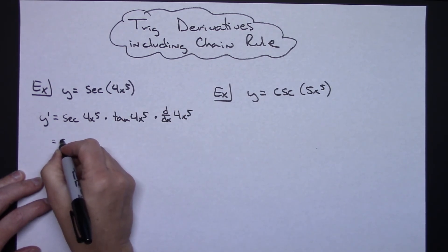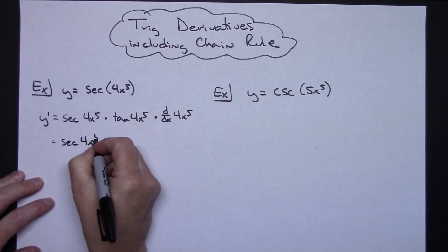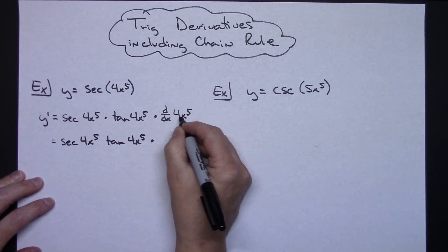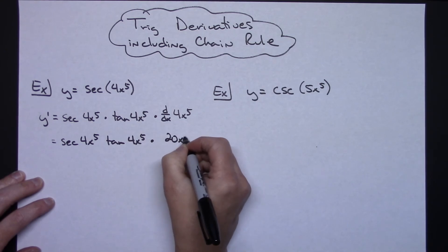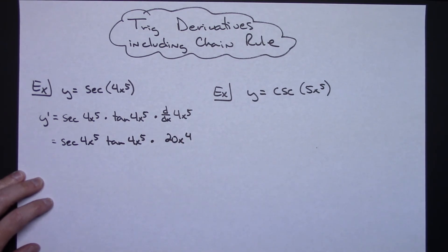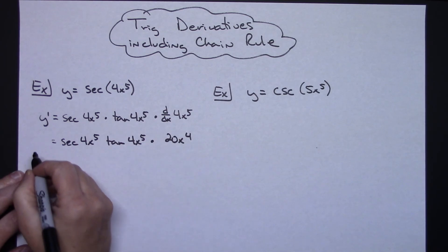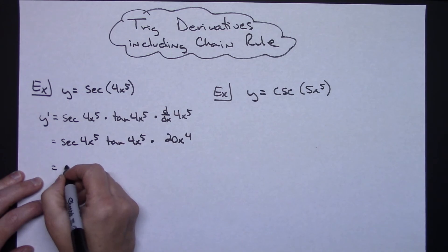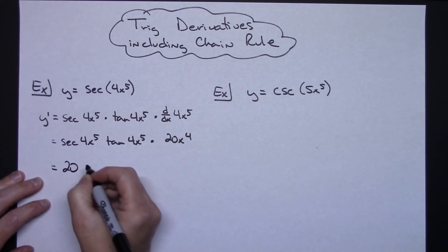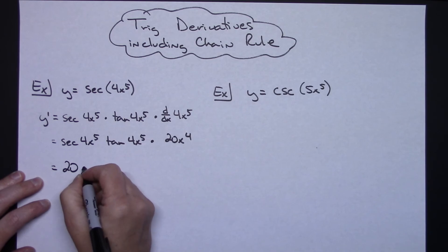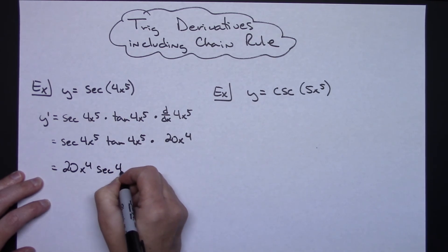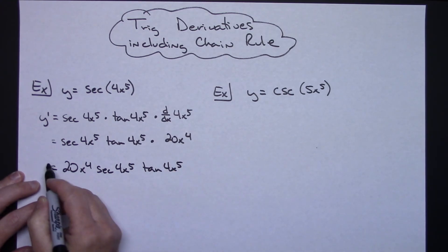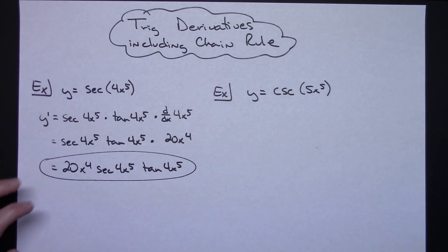Simplifying on the next line: secant(4x⁵) times tangent(4x⁵), and then taking the derivative of the inside gives me 20x to the fourth. At that point I've completed the chain and the derivative. I'm going to put the 20x⁴ out in front of those trig functions to clean it up. So the overall derivative is 20x to the fourth times secant(4x⁵) times tangent(4x⁵).